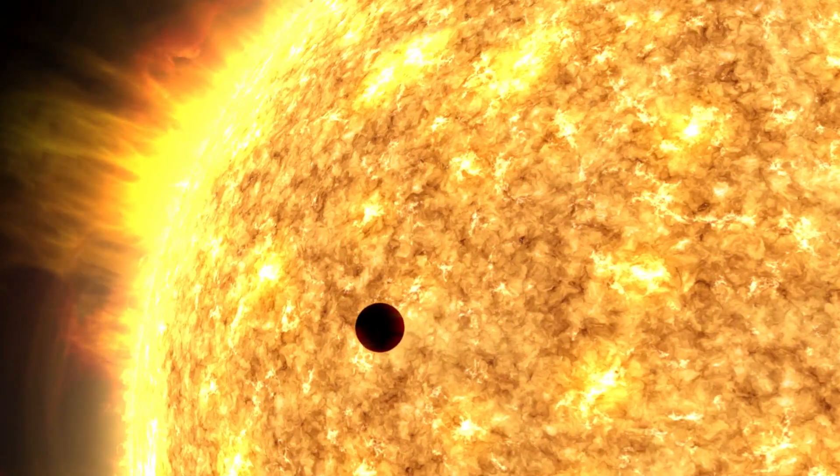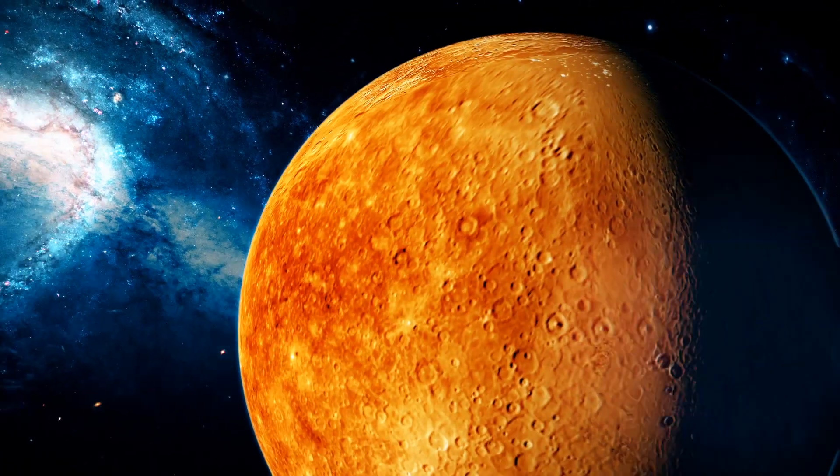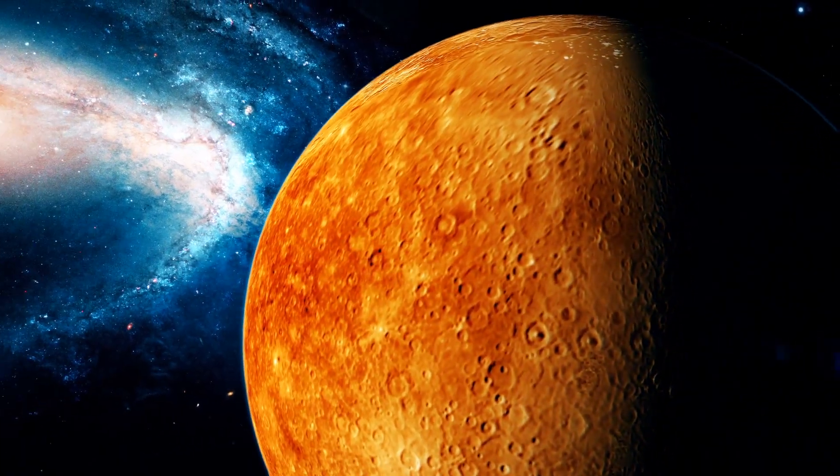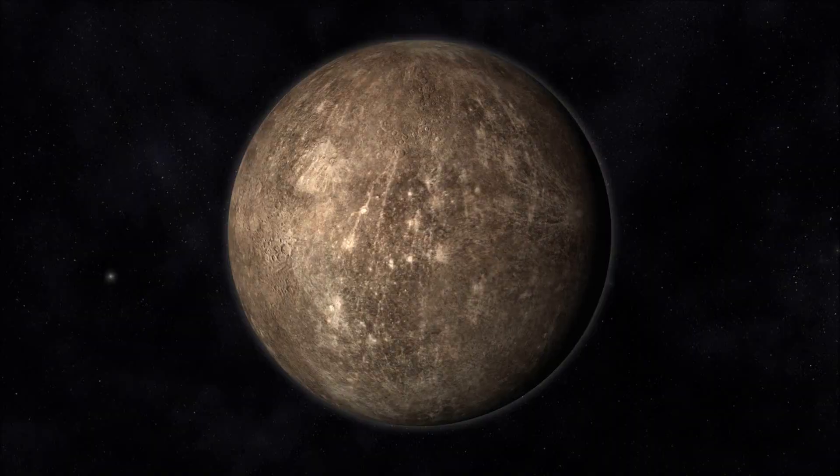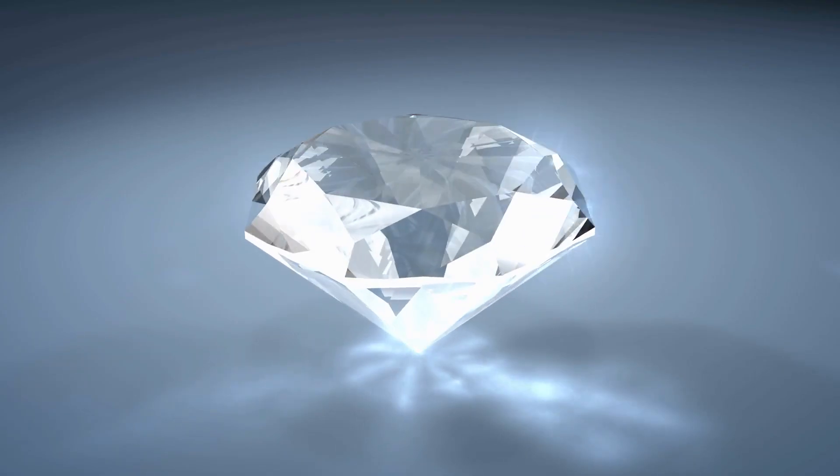This tiny planet, so close to the Sun, holds big secrets. For a long time, Mercury misled us about what lay beneath its surface. But now, space robots have made unusual discoveries, even hinting at diamonds in this scorching world, and that might be just the start.